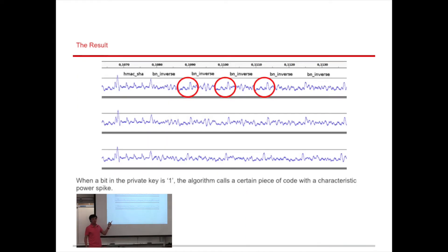So when he did it, he got these three waveforms here, three different examples of computing the public key. And so he was able to see that when a bit in the private key was one, the algorithm called a certain piece of code that had a characteristic power spike. And so by looking at this for a while, you might eventually see that you have this pattern right there. And so every time that happens, this BN inverse is getting called. And that only happens when a bit in the private key is one.